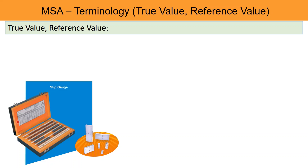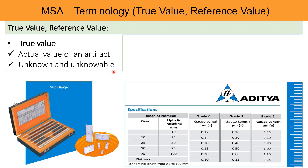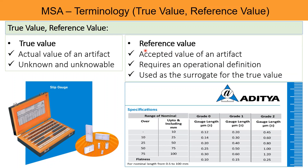True Value is the actual value of an artifact or a part. It is unknown and unknowable. In the specification table for a slip gauges set, the nominal value and tolerance range are tabulated. Within the tolerance range, the true value may lie anywhere, but it is unknown. Reference Value is the accepted value of an artifact and requires an operational definition. It is used as the surrogate for the true value. Since the true value is not known, the value taken into consideration is called the reference value.